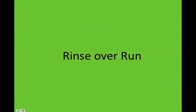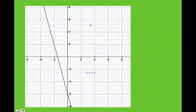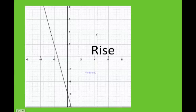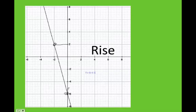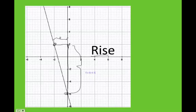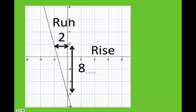Let's understand the rise over run method. Anytime you use rise over run, you do rise over run. First, let's find two points on the line. I'll grab this point and this point. Once you grab these two points, make a line here and then here — you're building a triangle. I want to figure out how much is from here to here — that's my rise — and then how much from here to here — that's my run. My rise is 8 and my run is 2.